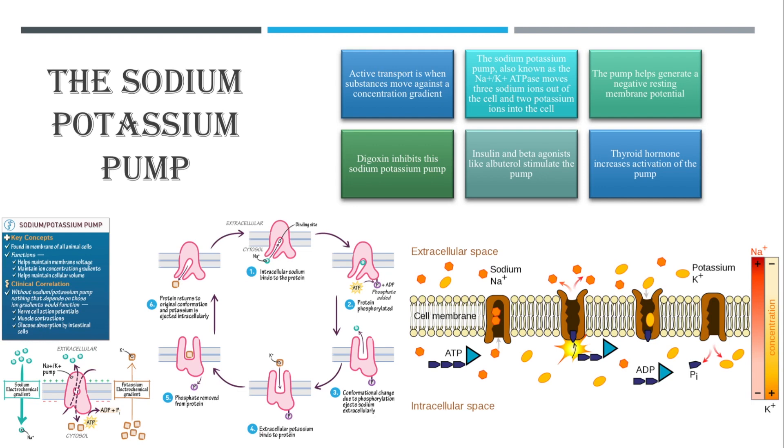Before we begin we should discuss active transport, which is what this pump does. Active transport is when you move substances against a concentration gradient. Since it's going against the concentration gradient you need energy, and this pump uses energy in the form of ATP.